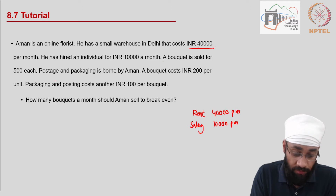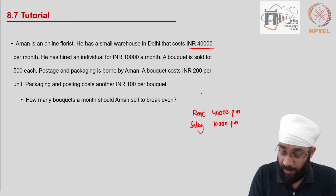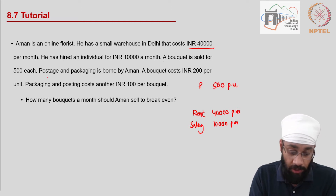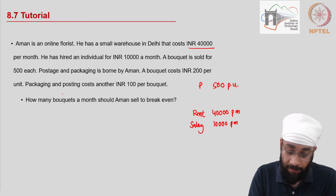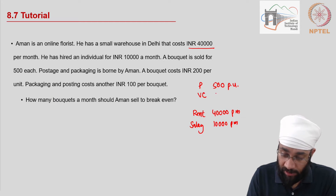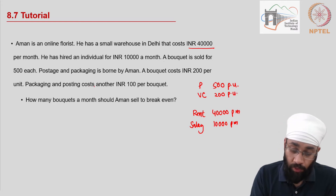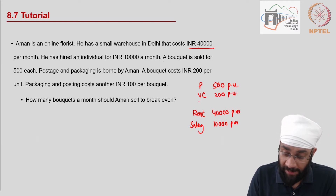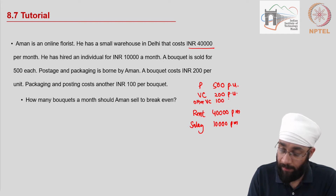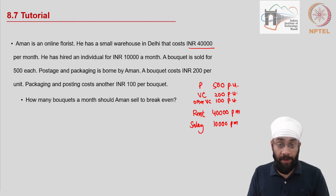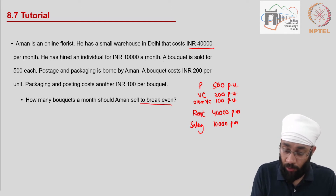A bouquet is sold for 500 each — this is the price P, so P = 500. The postage and packing cost is borne by him, and a bouquet costs 200 per unit — this is the variable cost. Additionally, other variable costs such as packaging and posting are 100 per unit. How many bouquets a month should Aman sell to break even?